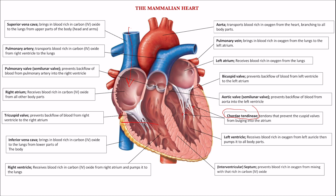From the vena cava into the right atrium — the superior vena cava from above, carrying blood from the neck and head, and the inferior vena cava from the lower parts of the body. From the right atrium, through the tricuspid valve, into the right ventricle, through the semilunar valve, through the pulmonary artery to the lungs. From the lungs, through the pulmonary vein, into the left atrium, through the bicuspid valve, into the left ventricle, and into the aorta via the semilunar valve.